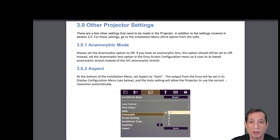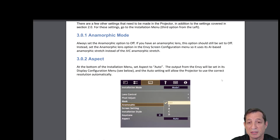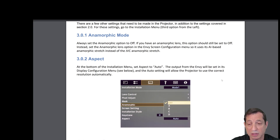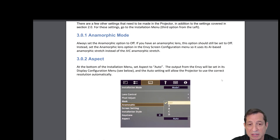Now let's talk about some other projector settings briefly. There are a few other settings that need to be made in the projector in addition to the settings we covered earlier. For these settings, go to the installation menu on the JVC. First, let's discuss anamorphic mode. Always set the anamorphic option to off. If you have an anamorphic lens, this option should still be set to off. Instead, set the anamorphic lens option in the Envy screen configuration menu so it uses the Envy's AI-based anamorphic stretch instead of the JVC anamorphic stretch. We have a lesson that covers how to set up the Envy for use with an anamorphic lens.